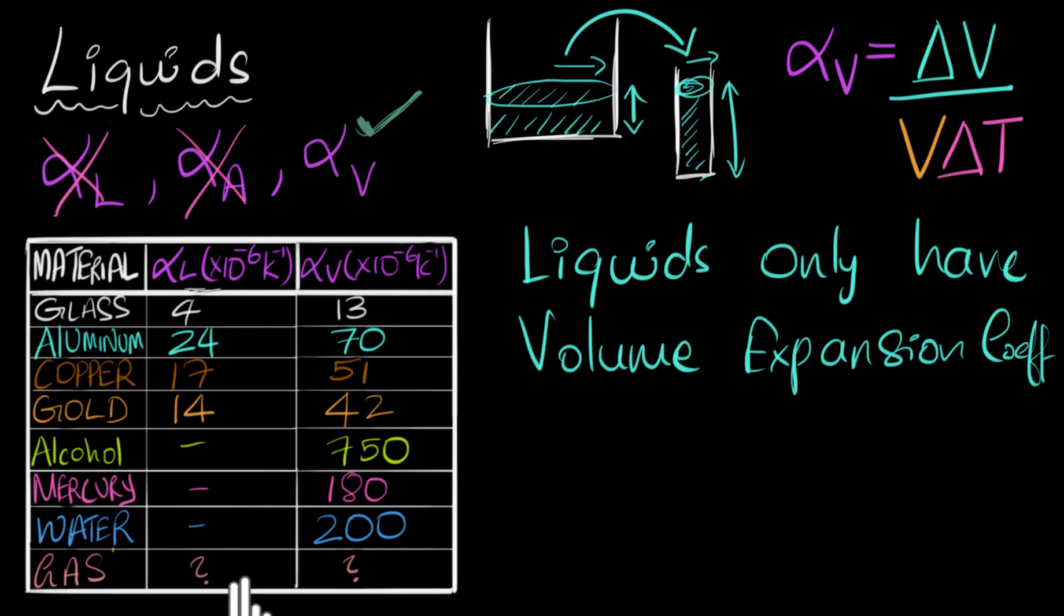We also have a gas, and you can see a couple of question marks over here. That's because gases are extremely interesting. They have their own story, and so we'll do that in another video. So let's not worry about them over here. But another thing which we can see from this table is that, look at the values of alpha V. They are incredibly large compared to that of solids. They are huge.